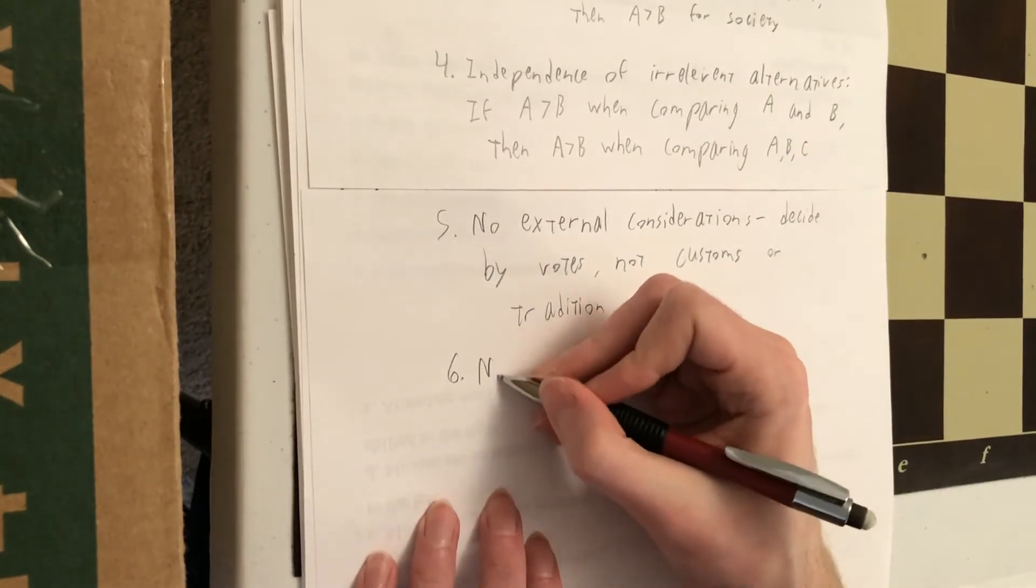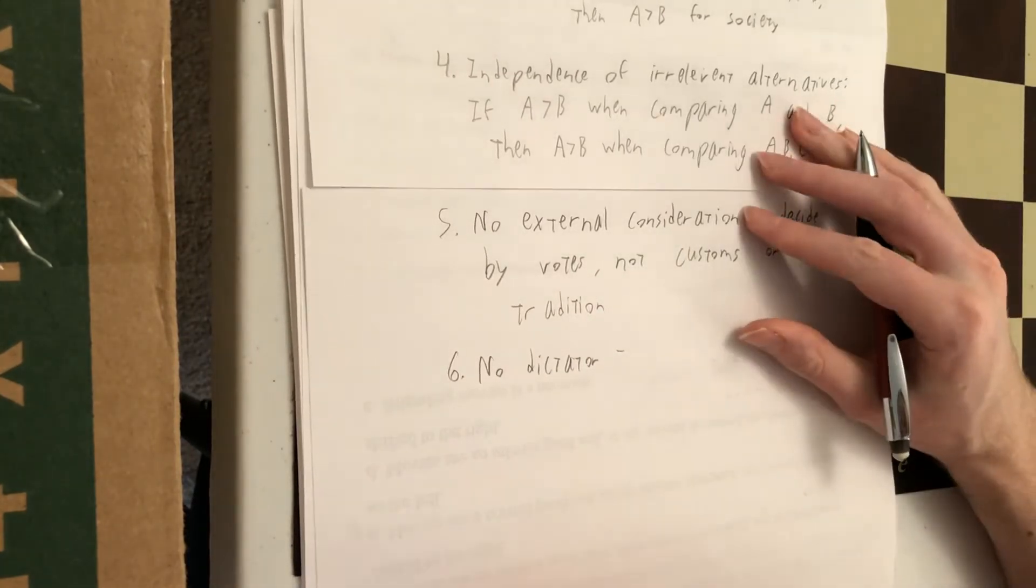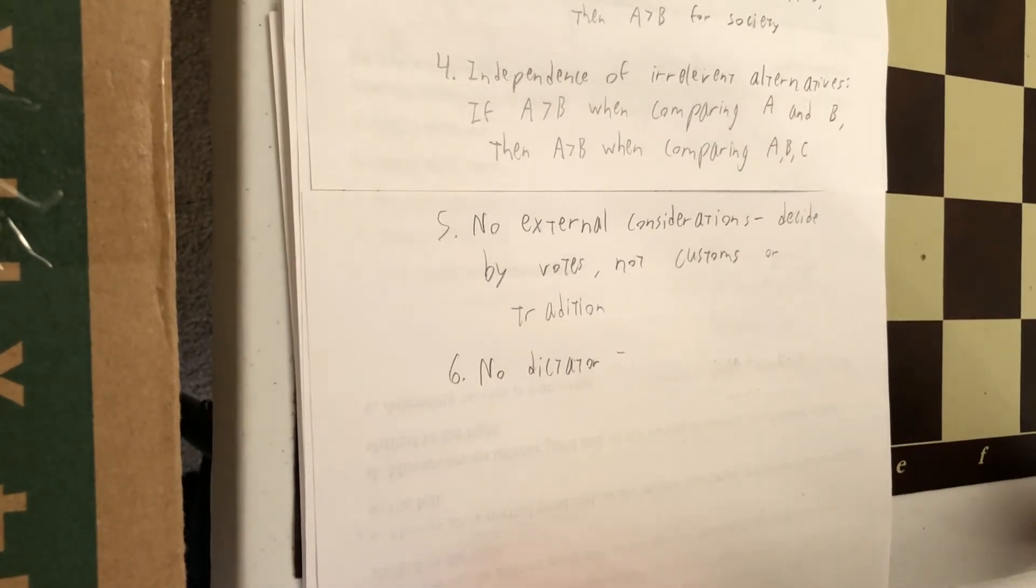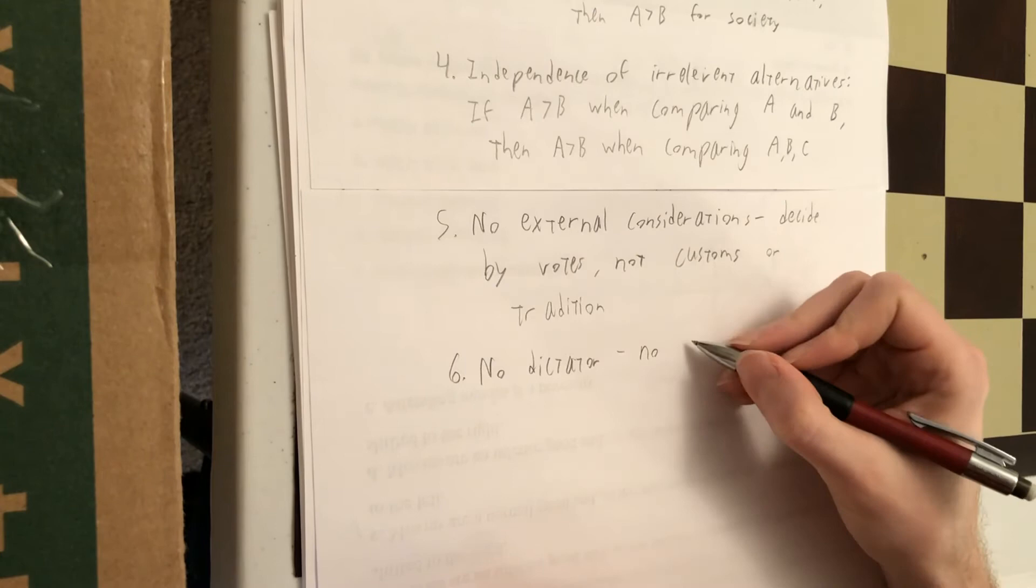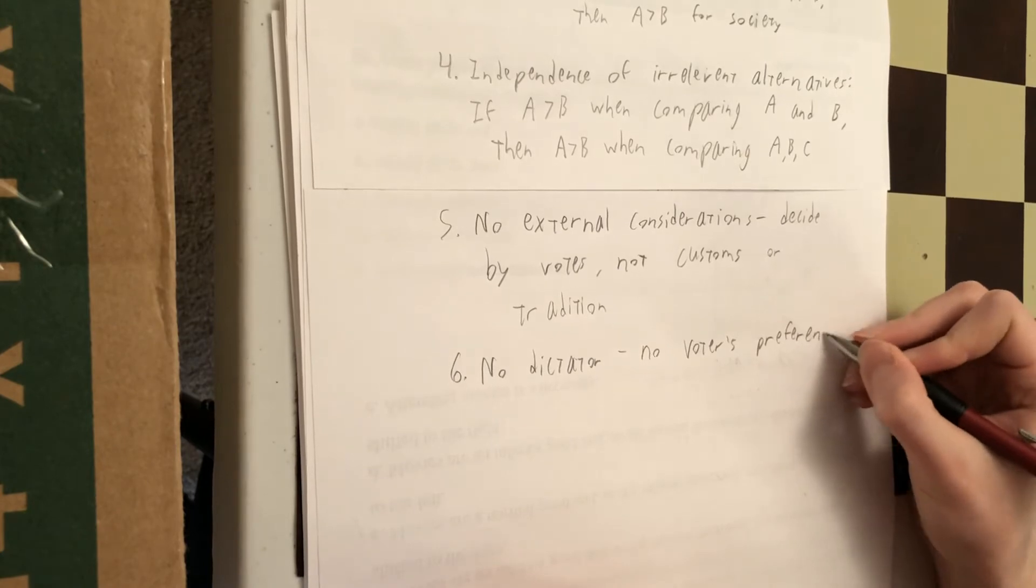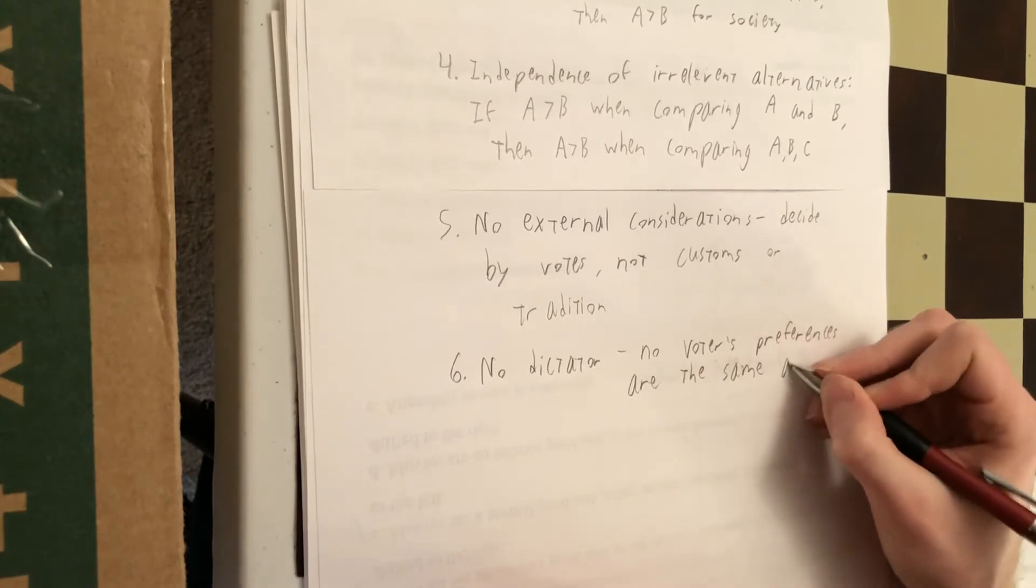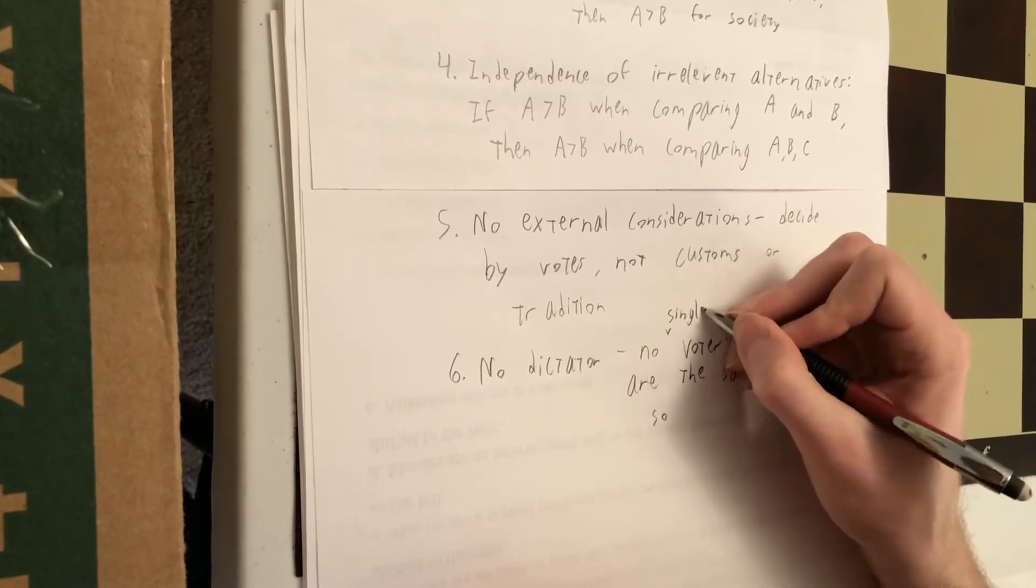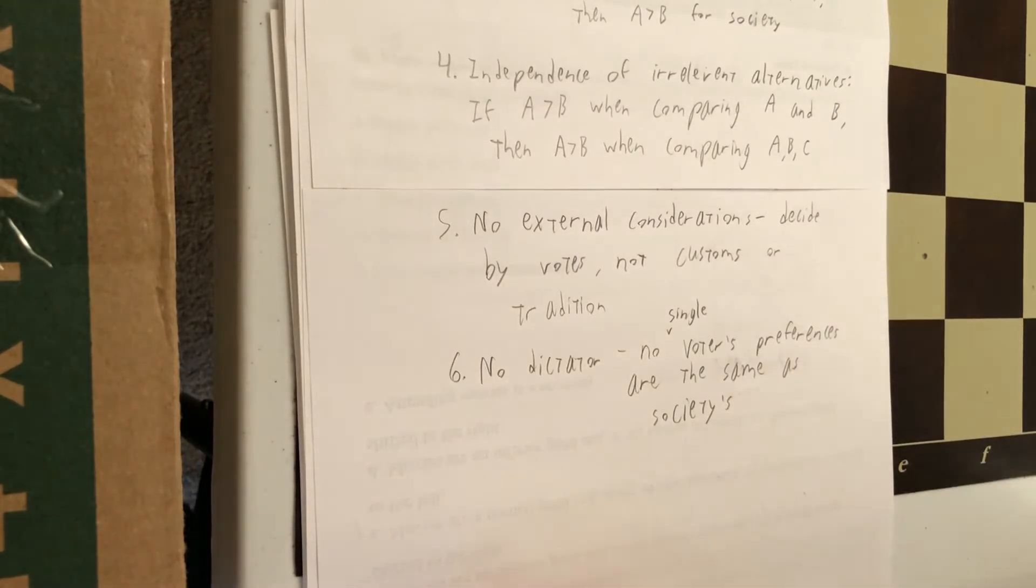Requirement number six, no dictator. By that I mean, there's no individual whose preferences perfectly match society's preferences. And again, if you support democracy, number six seems very reasonable indeed.